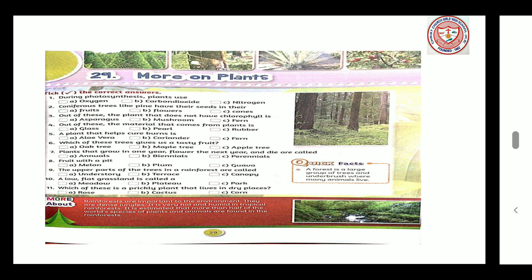More on Plants - Tick the correct option. Number 1: During photosynthesis, plants use carbon dioxide. Number 2: Coniferous trees like pine have their seeds in their cones. Number 3: Out of these, the plant that does not have chlorophyll is mushroom. Number 4: Out of these, the material that comes from plants is rubber. Number 5: A plant that helps cure burns is aloe vera.